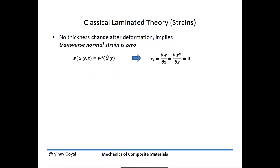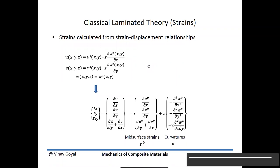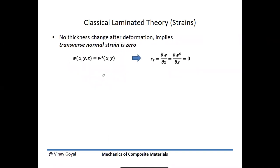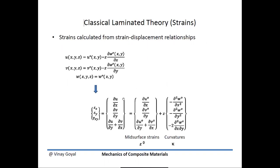W equals W⁰ implies the derivative of W through the thickness is zero, which is the strain in that direction. So no thickness change implies no strain in the z-direction. Using these assumptions, we calculate the remaining three strains: epsilon x, epsilon y, and gamma xy — the in-plane strains. The three transverse strains are zero, leaving only these three to worry about.